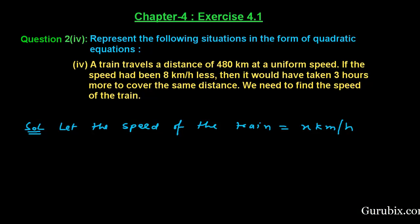A train travels a distance of 480 km at a uniform speed. If the speed had been 8 km/h less, then it would have taken 3 hours more to cover the same distance. We need to find the speed of the train. Let us see how to solve this question.